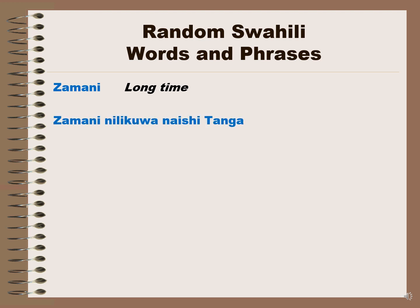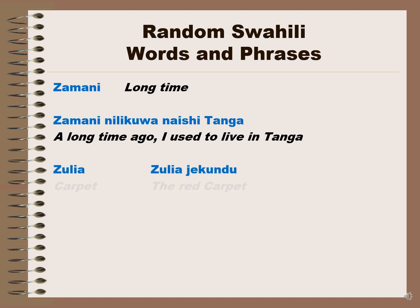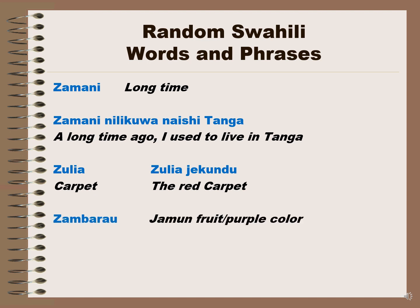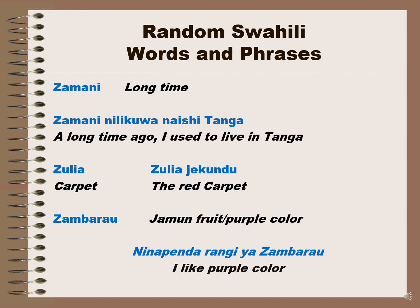Zamani means long time ago. For example, 'Zamani nilikuwa naishi Tanga' means a long time ago I used to live in Tanga. Zulia is carpet. 'Zulia jekundu' is the red carpet. Zambarau is a fruit or the color purple. 'Ninapenda rangi ya zambarau' means I like the purple color.